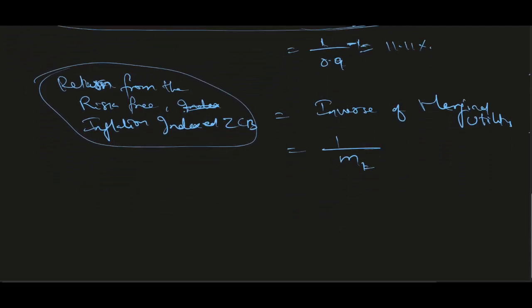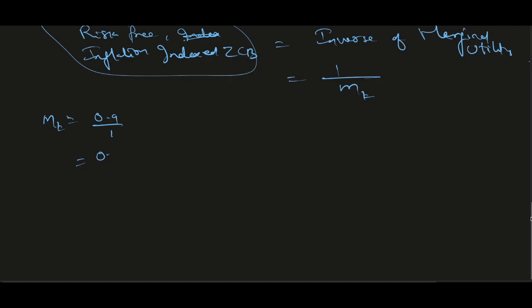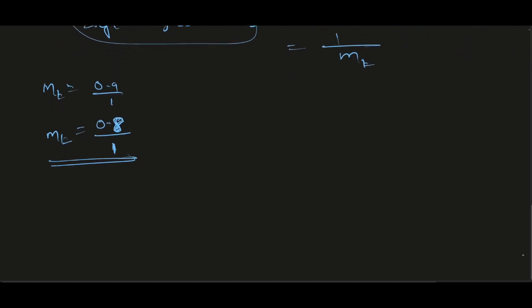If investors expect worse times ahead, their marginal utility of future consumption is further decreased relative to current consumption. So if MT is currently 0.9, it will come down further — to 0.8 or lower — because investors would prefer to consume now rather than trust the utility of future consumption.